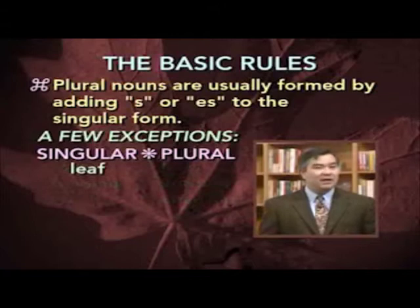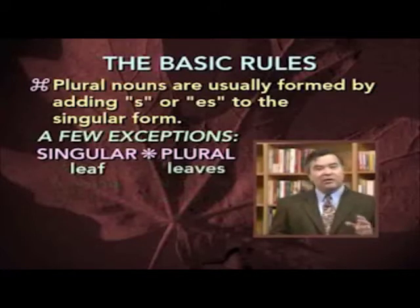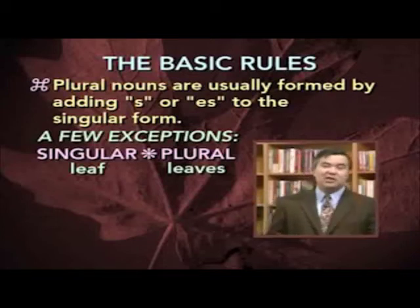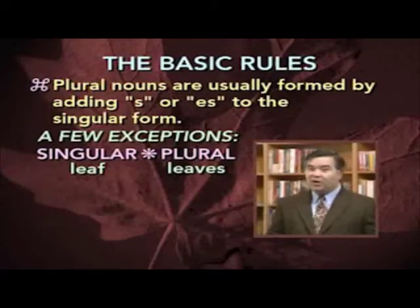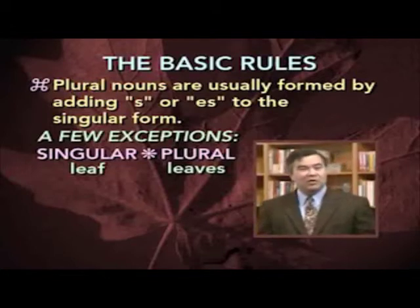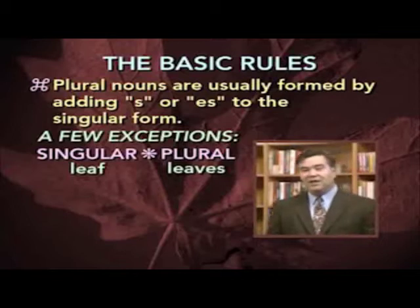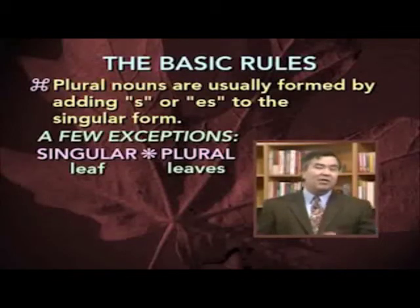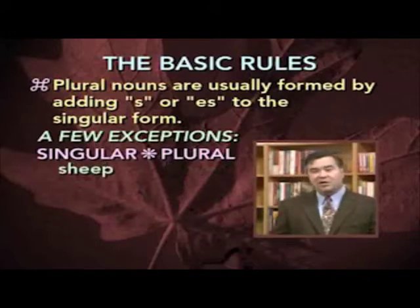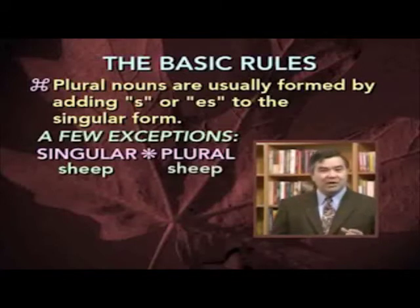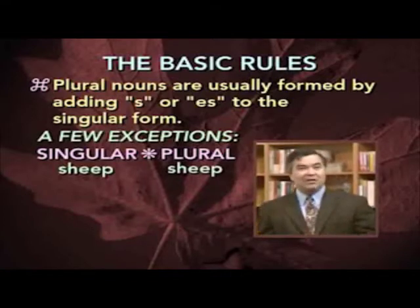Take the word leaf. When we turn this into a plural, not only do we add ES at the end, but we also change the spelling. The F that ends the word leaf turns into a V, and the plural form is leaves. Many, though not all, words that end in F are turned into plurals by changing the F into a V and then adding ES. And then there are a few words referring to different kinds of animals which are exactly the same in the singular and the plural. For example, sheep is the singular referring to one animal, and a whole flock of them would also be referred to as sheep.